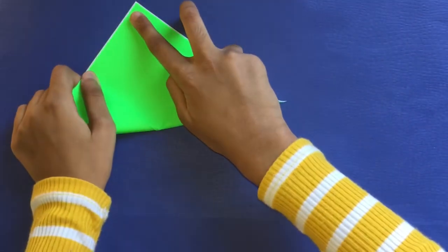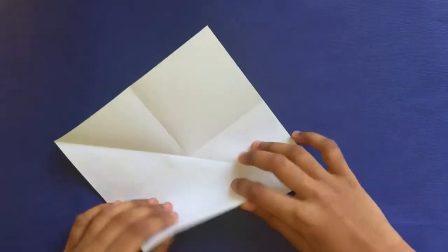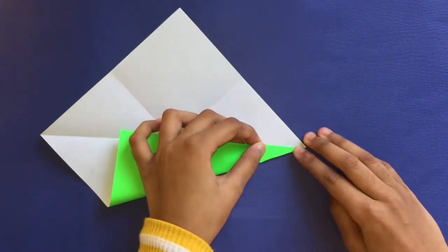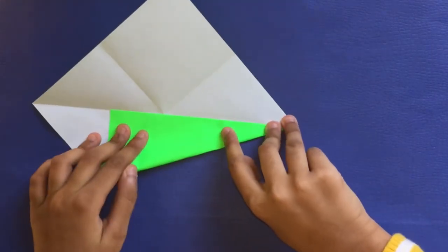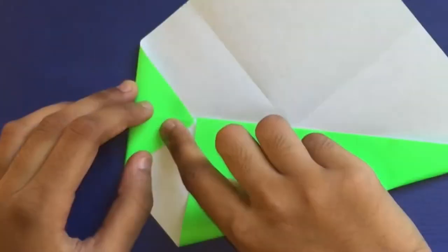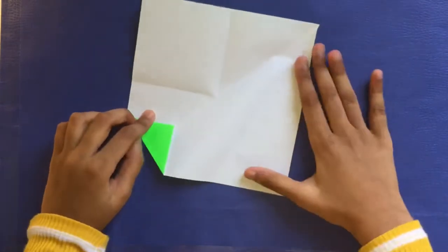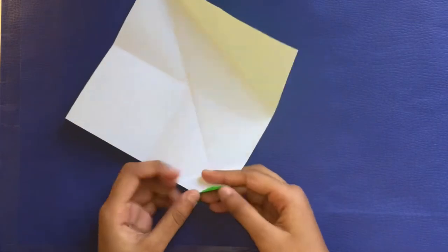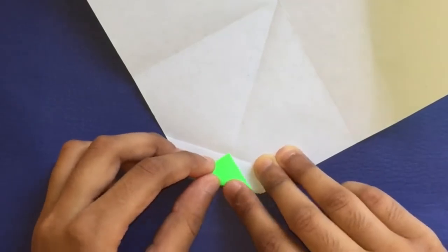Fold diagonally in half. Now you're going to crease lightly, do not make the actual fold, just make this point. Now fold this right there. Unfold this, rotate, unfold this, and fold this point to this crease at this intersection.